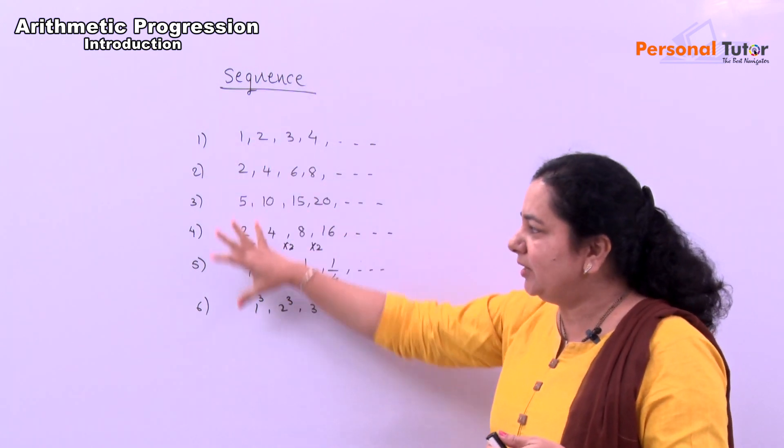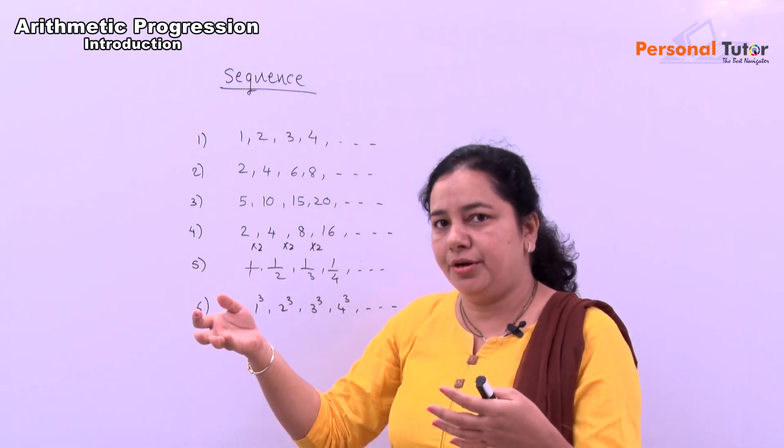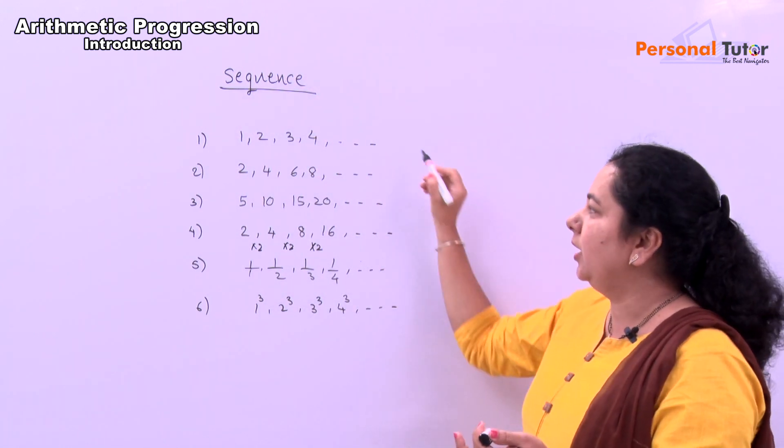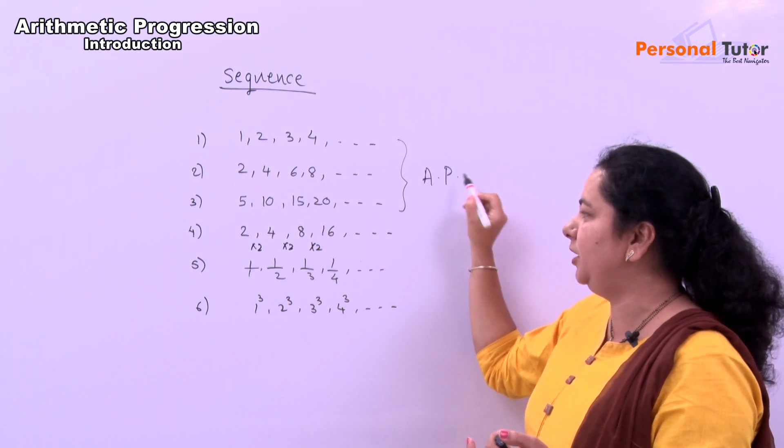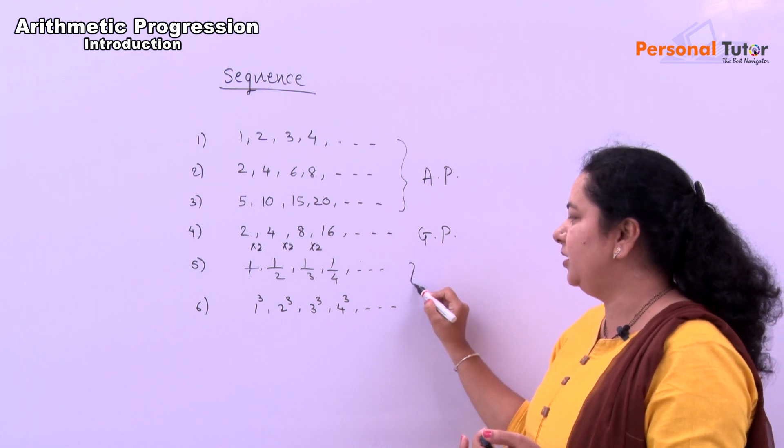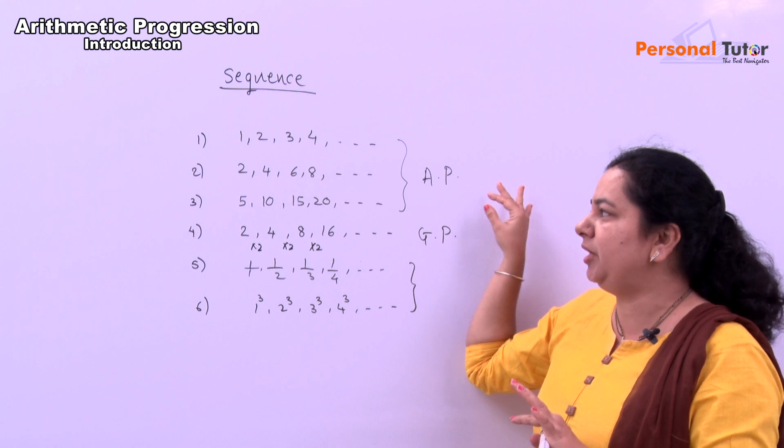Now, all these numbers have some particular pattern and they are arranged in definite order. Therefore, it is called as a sequence. And in this pattern, first 2, 3 examples are called as arithmetic progression. This is called as geometric progression. And these 2 are neither AP nor GP. AP means arithmetic progression.